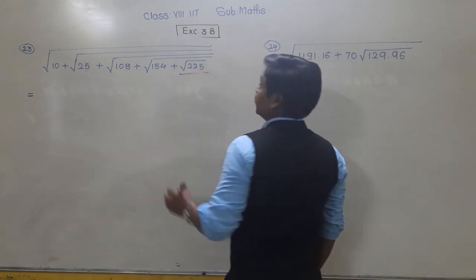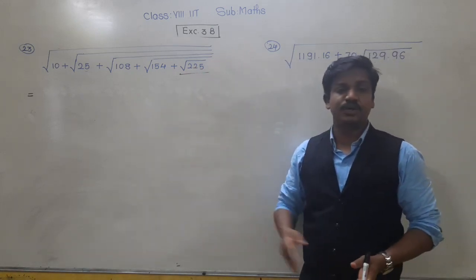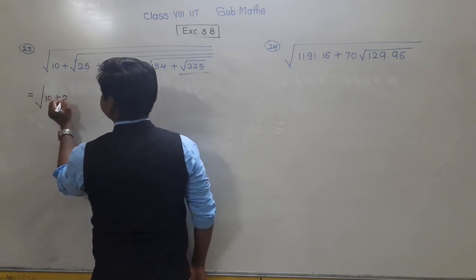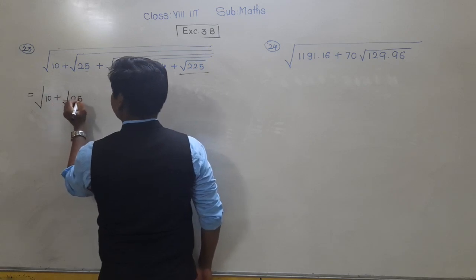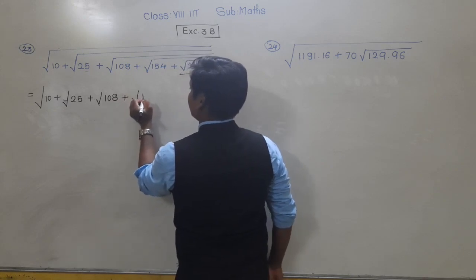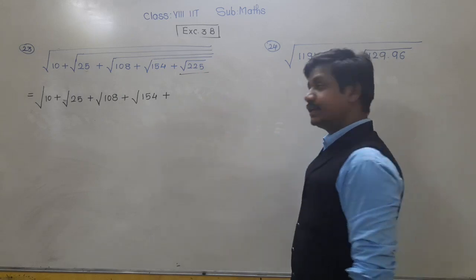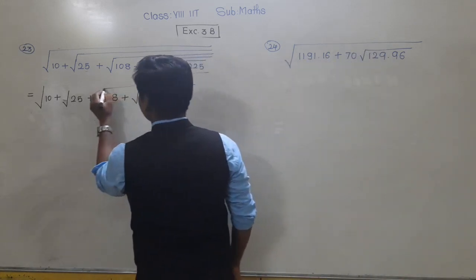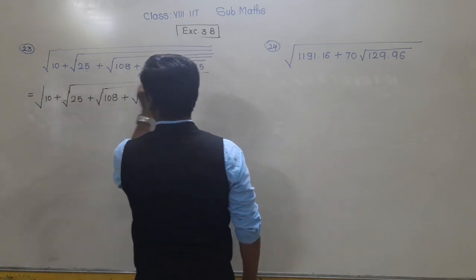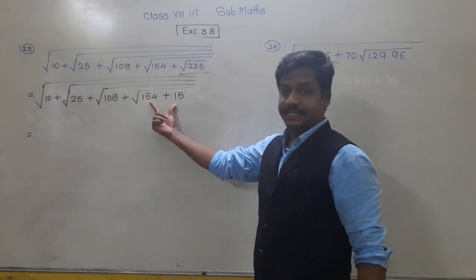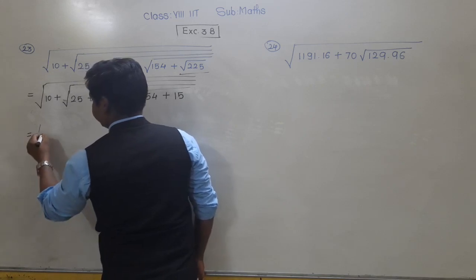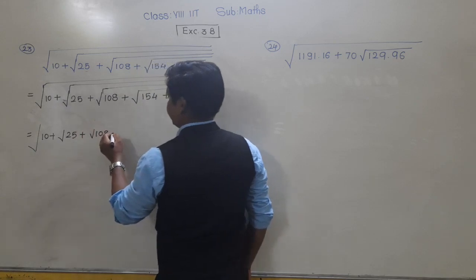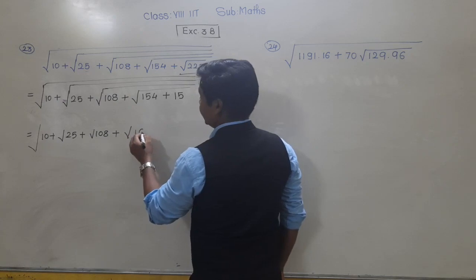Question 23: √(10 + √(25 + √(108 + √(154 + √225)))). How to solve this type of example — it is not so difficult. First, find the square root of the innermost number. The innermost square root contains 225, and 225 is the square of 15. So we write 15 there. Now: 154 plus 15 equals 169.